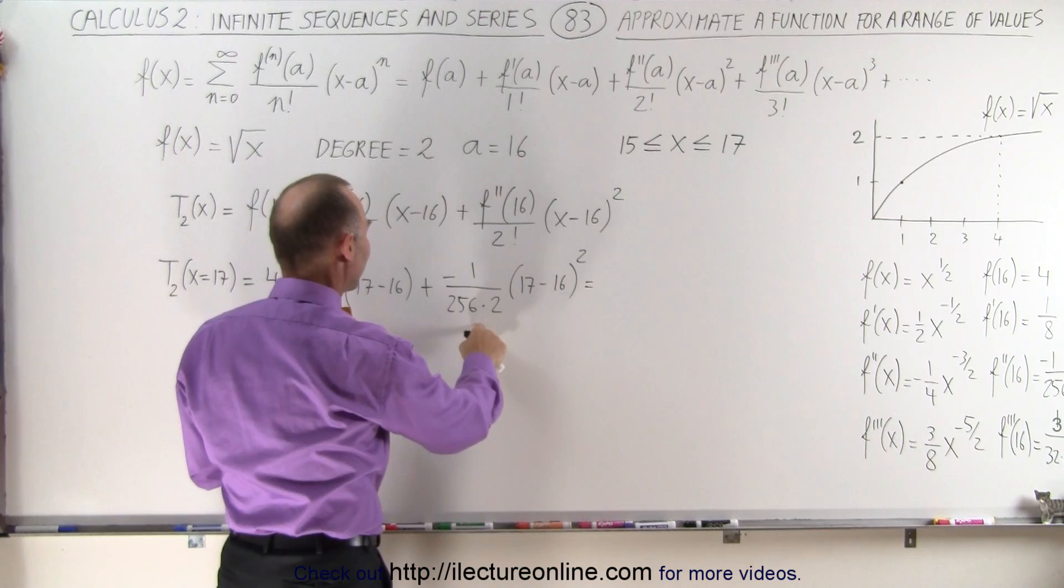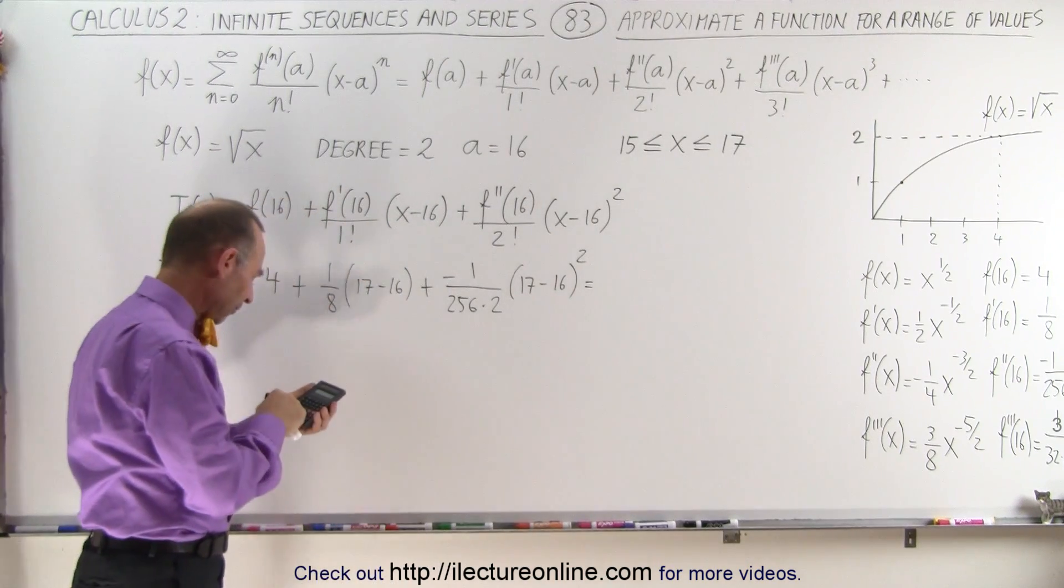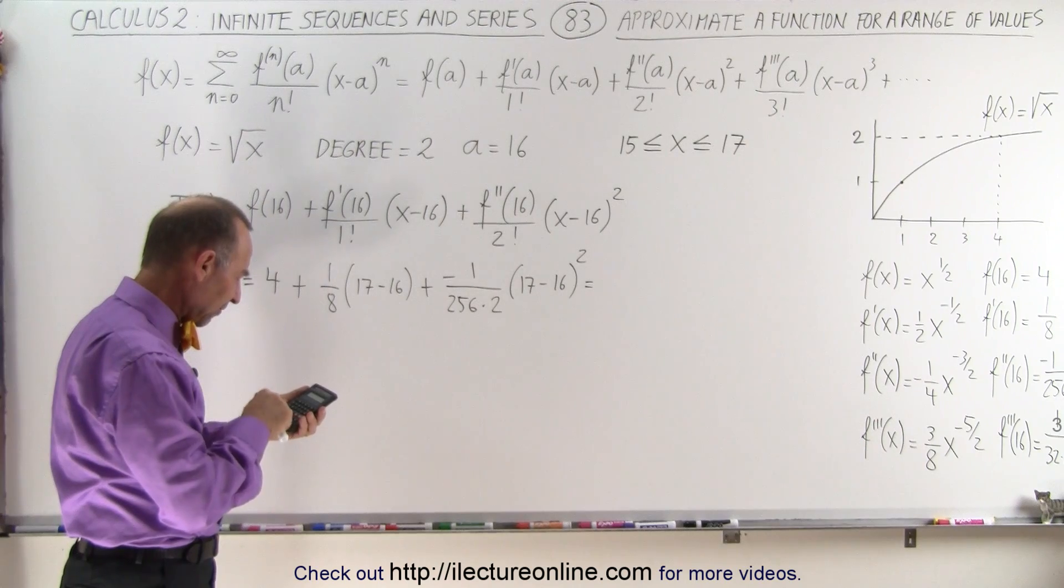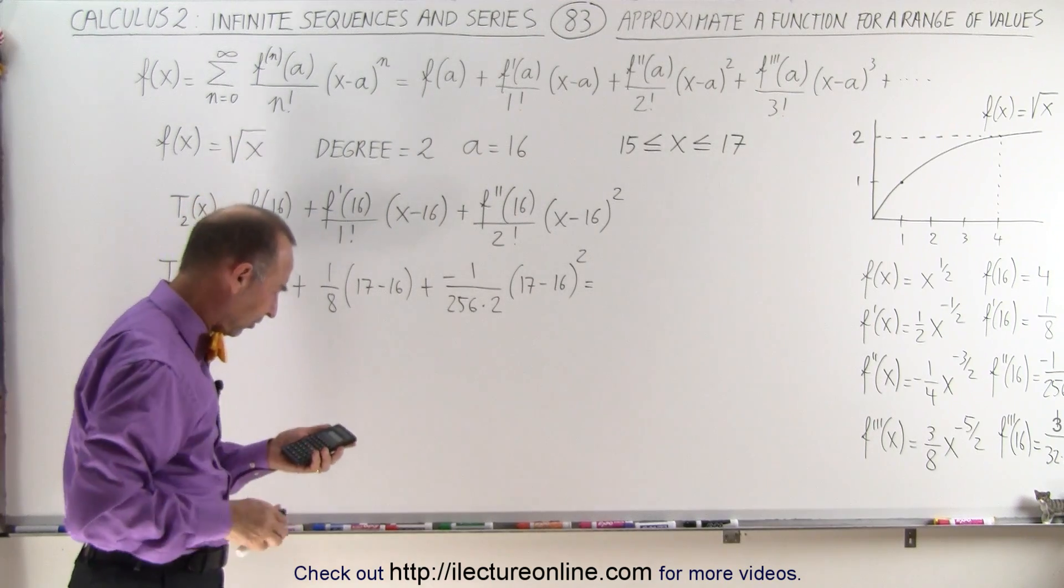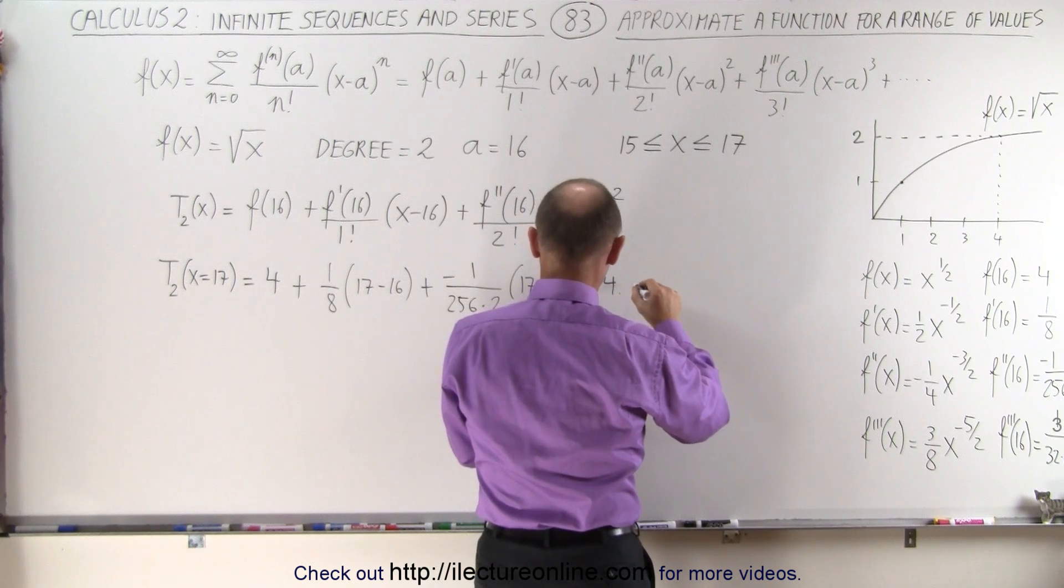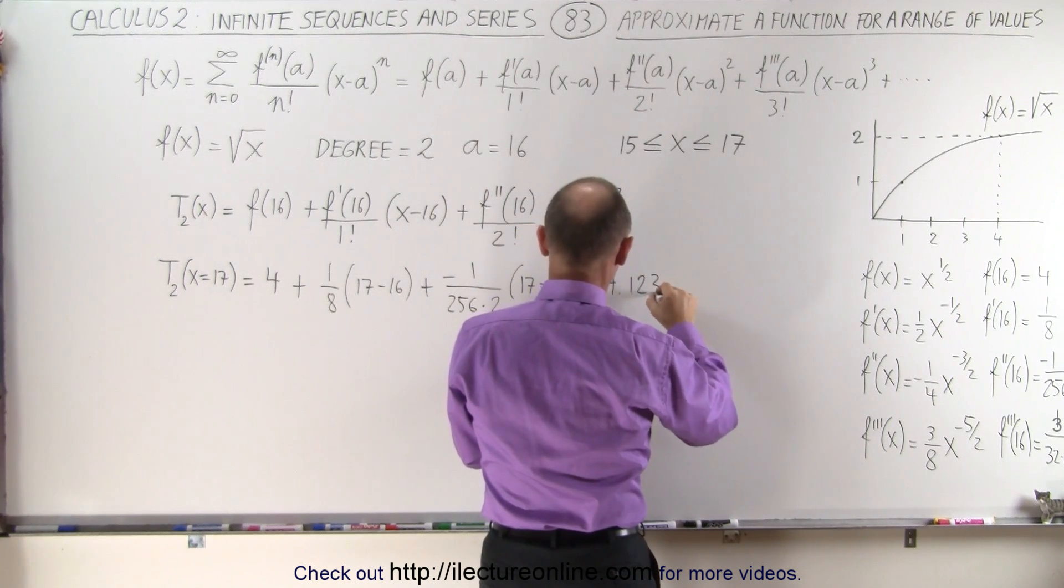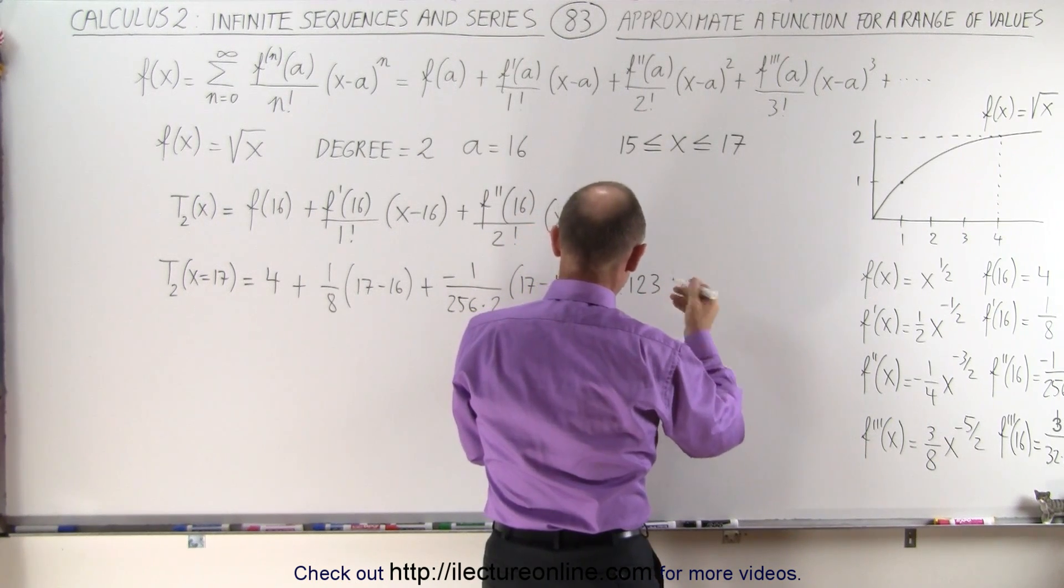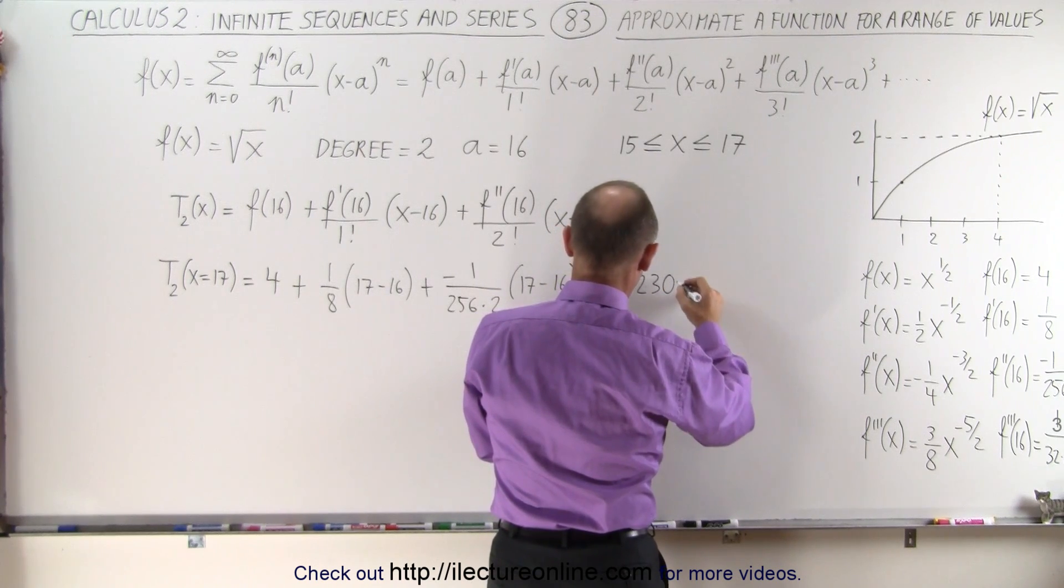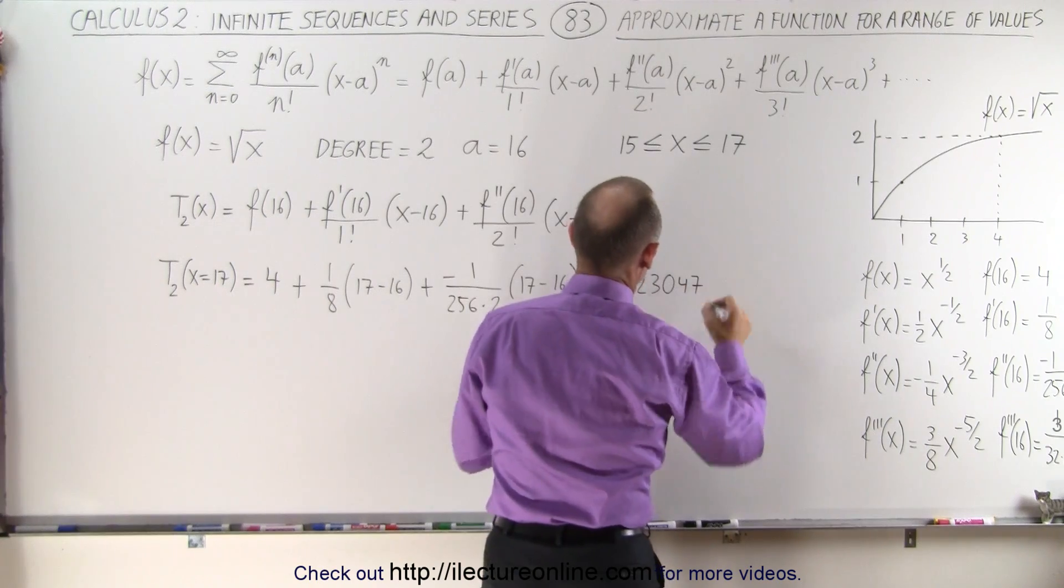So this would be 1, 1 divided by 512. So we have 4.125 minus 1 divided by 512 equals, and that gives us a value of 4.123. And let's just go two more or three more decimal places, 4047.